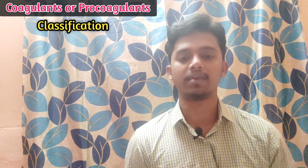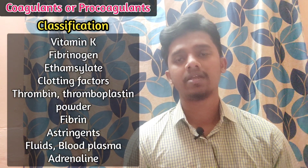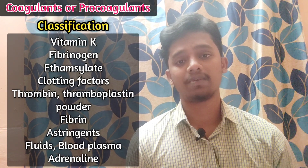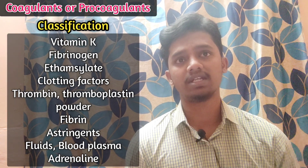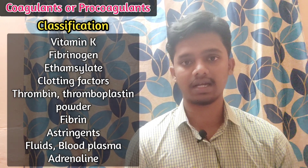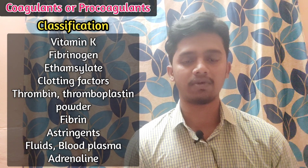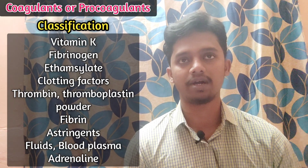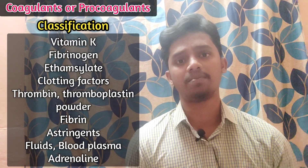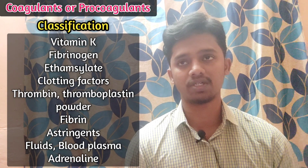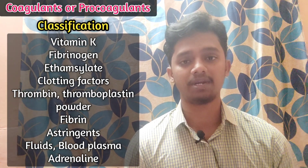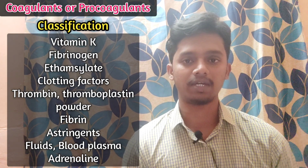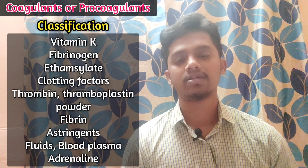Now let's talk about coagulant drugs that are available. Well-known ones include Vitamin K, fibrinogen, and ethamsylate. If a patient is deficient in clotting factors — like clotting factors 4, 6, 7, or 9 — those specific clotting factors can be administered. Also, thrombin powder, thromboplastin powder, and fibrin can all be used externally in powder form as coagulants.